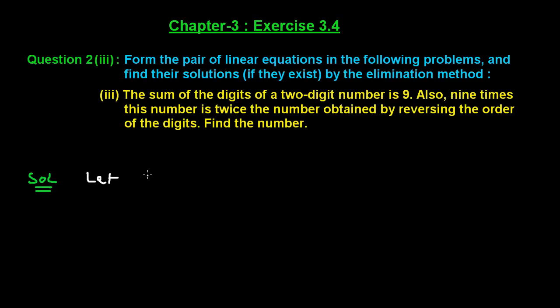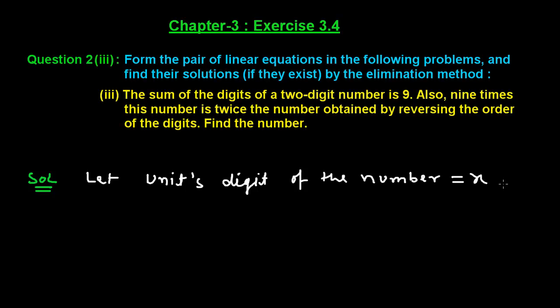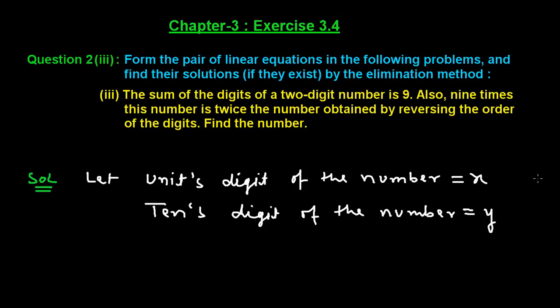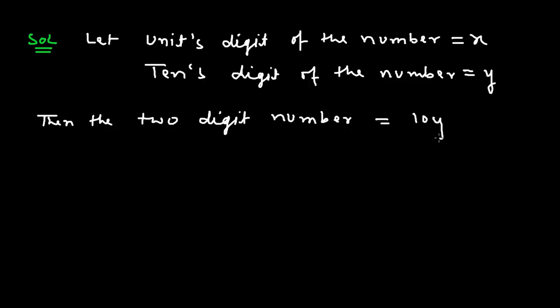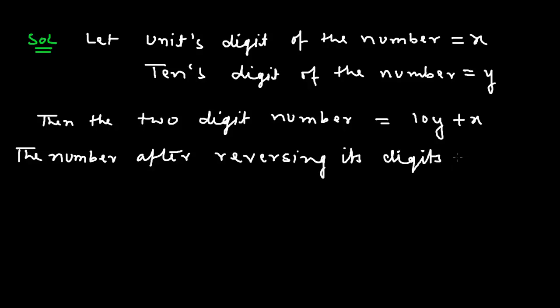Let the units digit of the number be x and the tens digit be y. Because this is a 2-digit number, we apply the formula for formation of a 2-digit number: the number is 10y + x. The number after reversing its digits will be 10x + y.